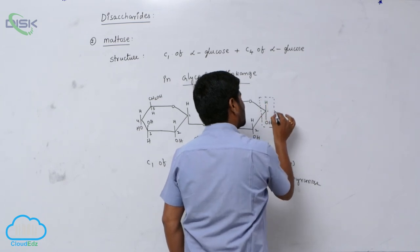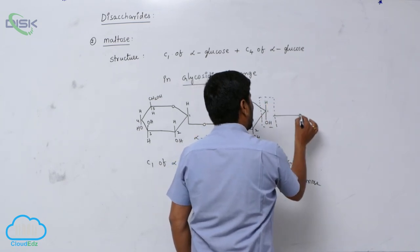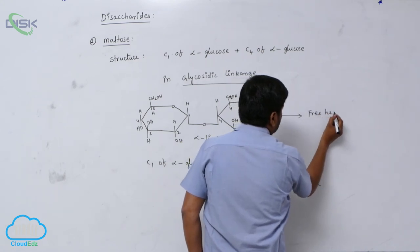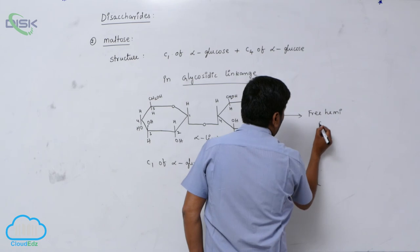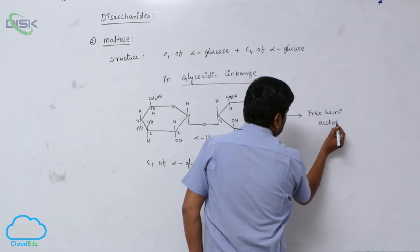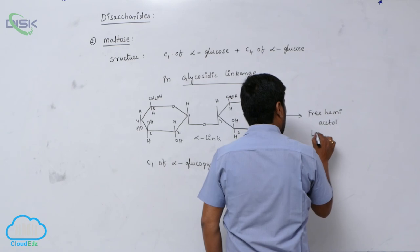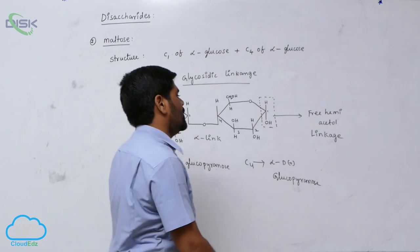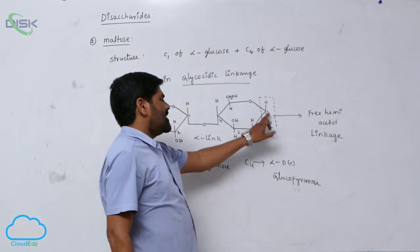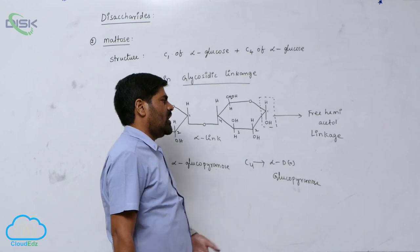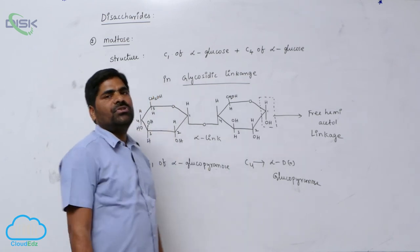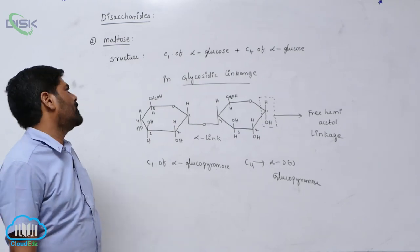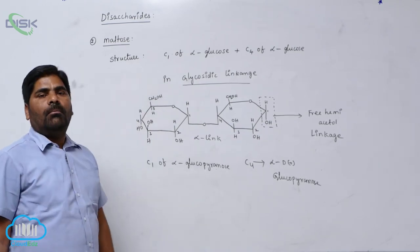In presence of Tollens reagent, ring opening takes place. It immediately converts into aldehyde to give Tollens test. This is about Maltose.